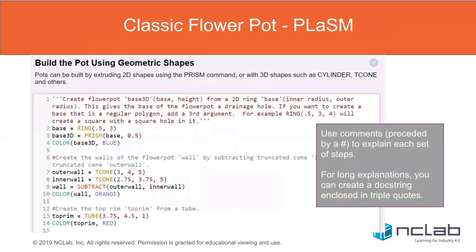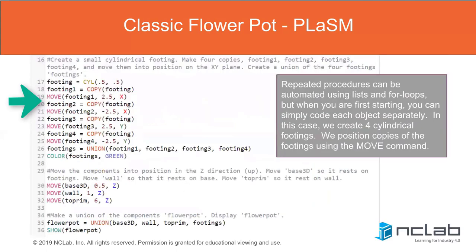Let's start building a flower pot in Plasm. When you're writing code, always document it — not just for other people but for yourself, so when you go back you can remember what each part does. There are two ways to comment: put a pound sign in front of a line for line-by-line commenting, or use doc strings — single quotes repeated three times at the beginning and end — to create longer narrative comments.